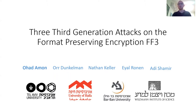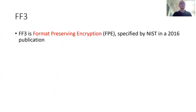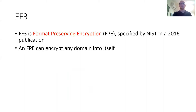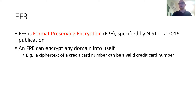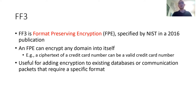Let's begin by defining FF3. FF3 is a format-preserving encryption specified by NIST in 2016. Format-preserving encryption can encrypt any domain into itself, unlike most block ciphers which can only handle a specific predetermined domain. For example, we can encrypt credit card numbers such that each ciphertext is also a conforming credit card number. This is useful mainly for adding encryption to existing databases or communication packets that require a specific format, where the ciphertext cannot be of a different format than the plaintext.